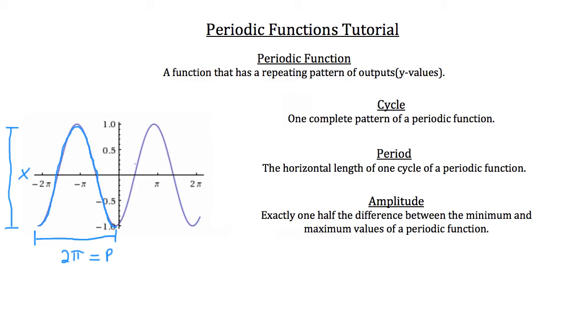So I can see that the maximum distance is 1 and the minimum is negative 1. So the difference, 1 minus a negative 1, is 2. And we want half of that value. Half of 2 is 1. So the amplitude of this particular function is 1 unit.